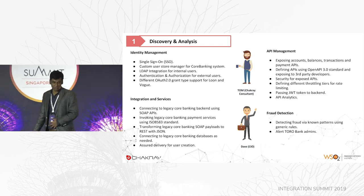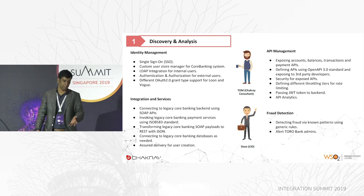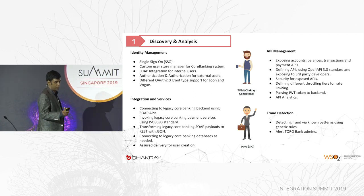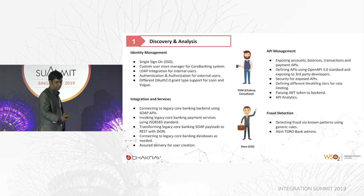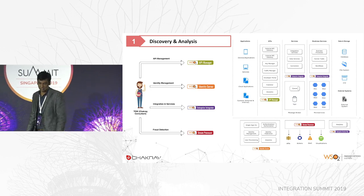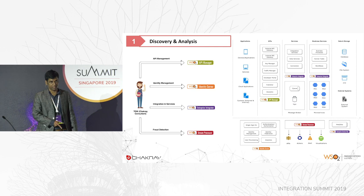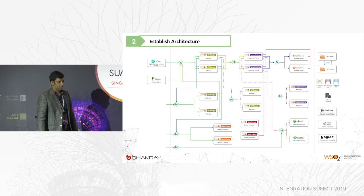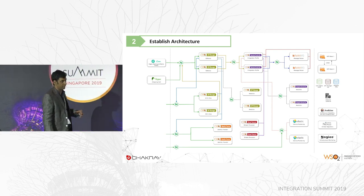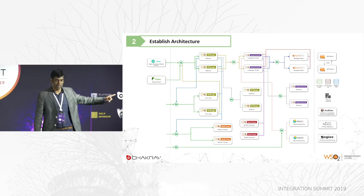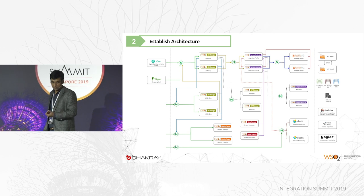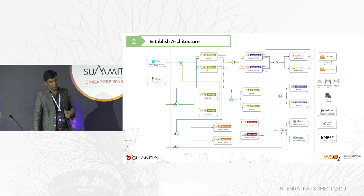Tom identified four critical main products to leverage from the WSO2 platform: WSO2 API Manager, WSO2 Identity Server, WSO2 Enterprise Integrator, and WSO2 Stream Processor. This is the L1 architecture of WSO2. Now, the second point is establishing the architecture. The Loan and Vogue applications have to talk to the gateway of the API Manager. We have used the partial HA deployment pattern, which has two gateways and two all-in-ones with two analytics nodes.